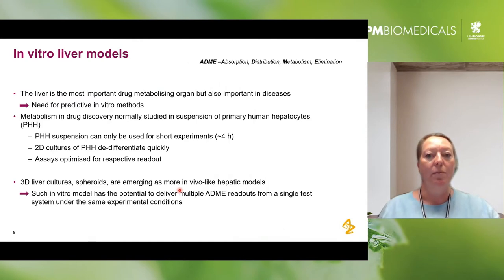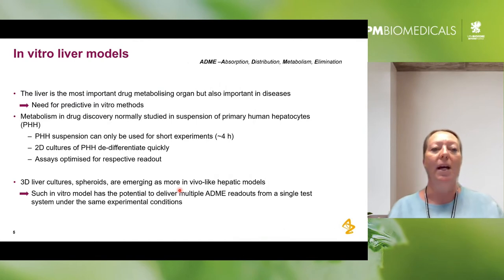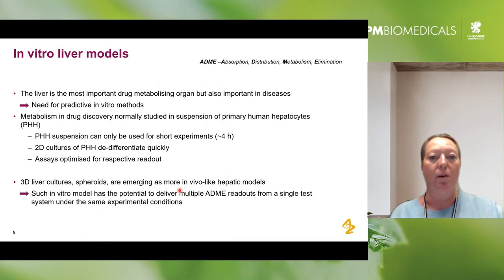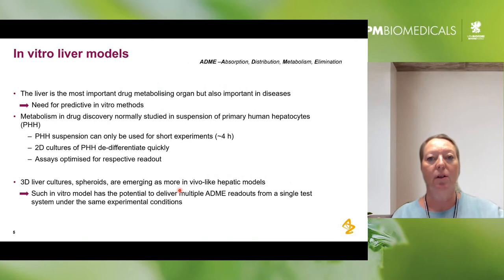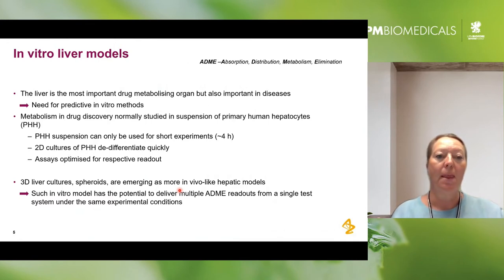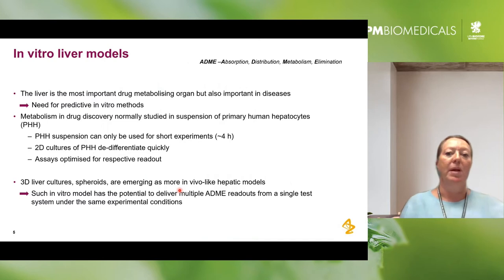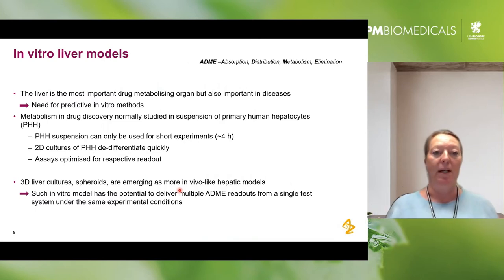If we go to the in vitro liver models — why do we need them? The liver is the most important drug metabolizing organ, but it's also important in diseases, and for this we need to have predictive in vitro methods. I work in a team where we investigate the ADME properties of our drug candidates — that is the absorption, distribution, metabolism, and elimination — and this we normally do in suspension of primary human hepatocytes.